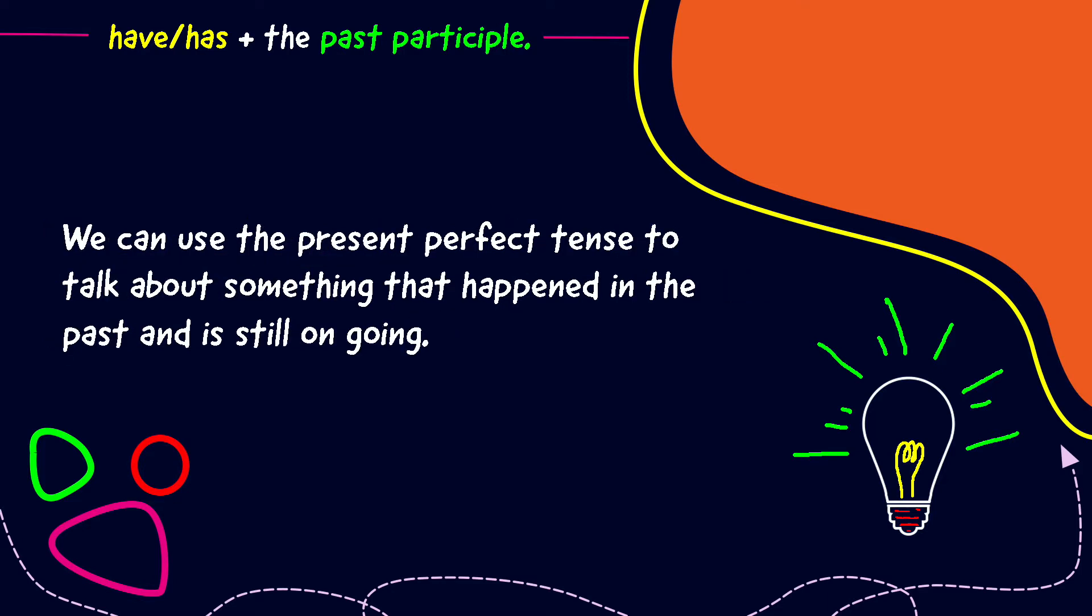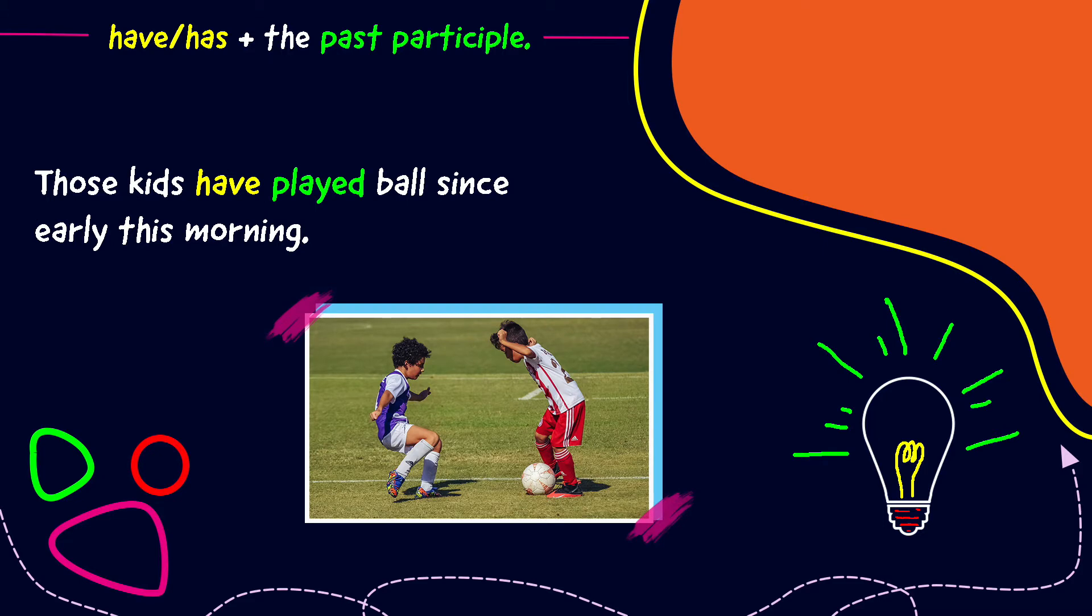We can use the present perfect tense to talk about something that happened in the past and is still ongoing. Those kids have played ball since early this morning.